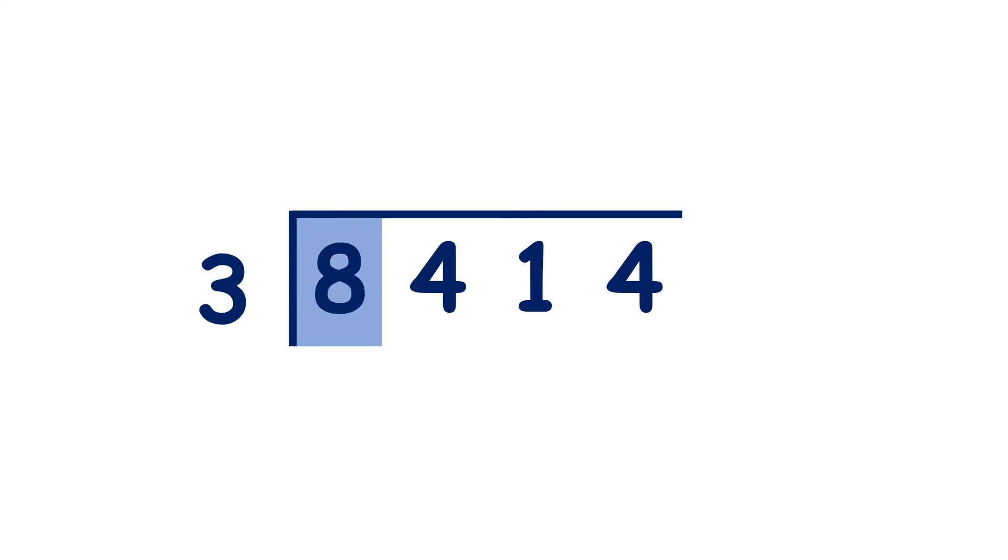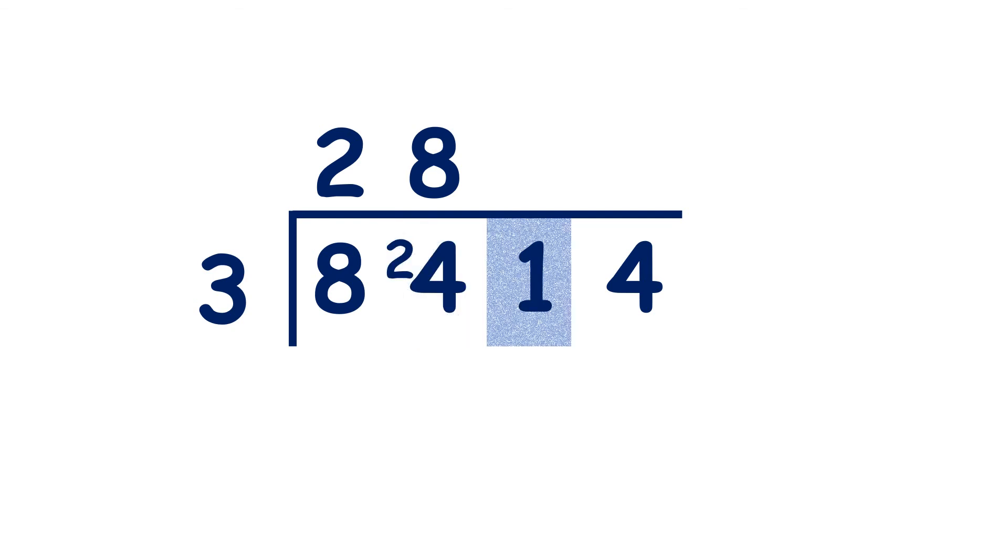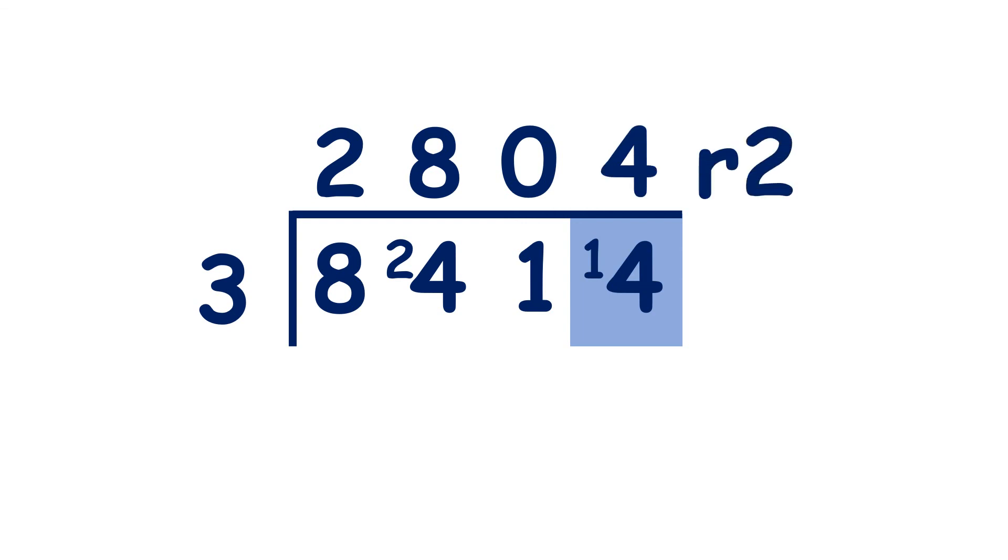8 divided by 3 is 2 remainder 2. 24 divided by 3 is 8 exactly. 1 divided by 3 is 0 remainder 1, and 14 divided by 3 is 4 remainder 2.